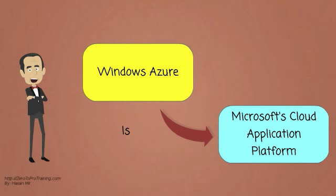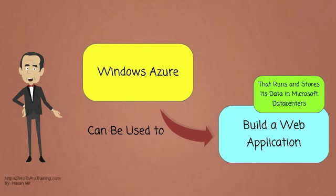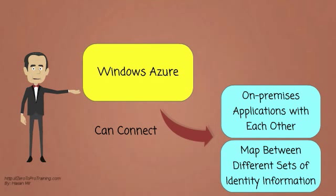Windows Azure is Microsoft's cloud application platform. Windows Azure can be used to build a web application that runs and stores its data in Microsoft data centers. It can connect on-premises applications with each other, or map between different sets of identity information.